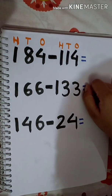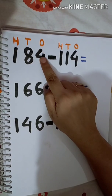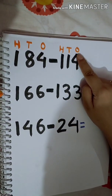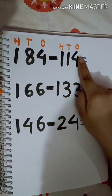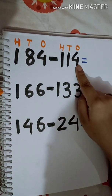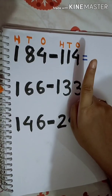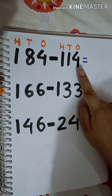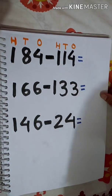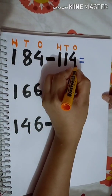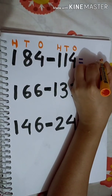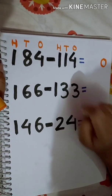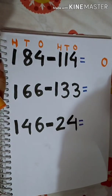First I will subtract the 1's digit: 4 minus 4. Here 4 is in the 1's place in both numbers. We can use the property of subtraction — when we subtract any number with itself, we get 0. So 4 minus 4 is equal to 0.